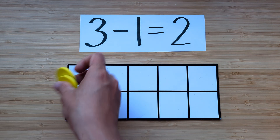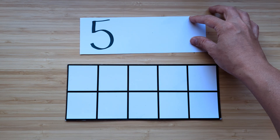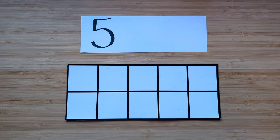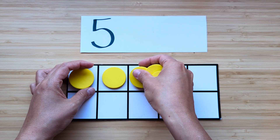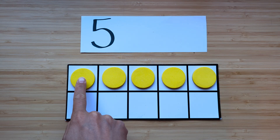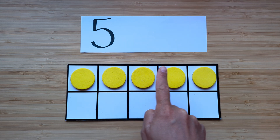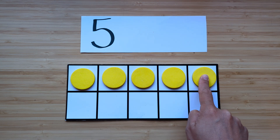Clear off your boards. This time, make the number five. We're gonna count together. Point and count. One, two, three, four, five.